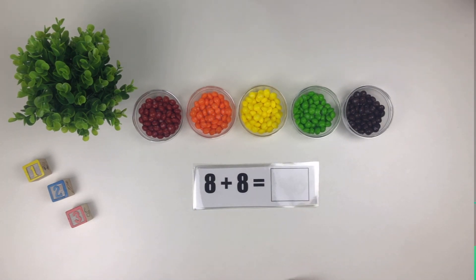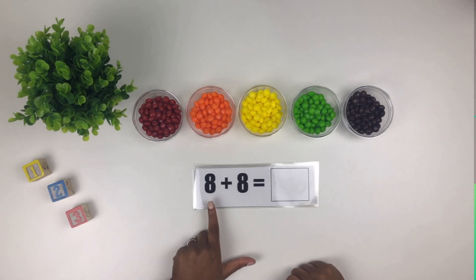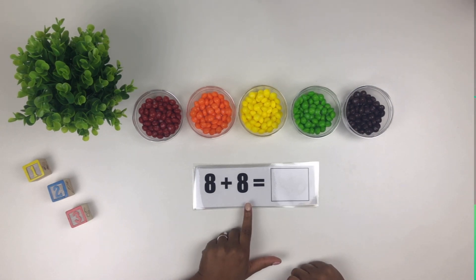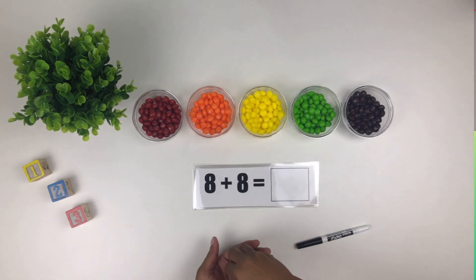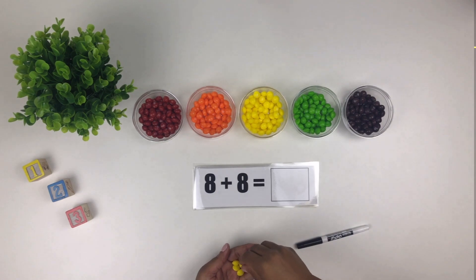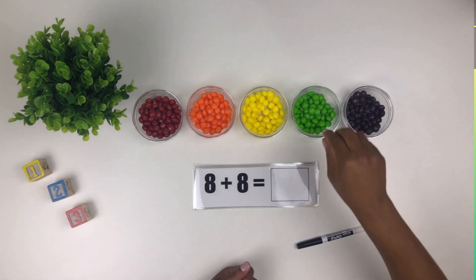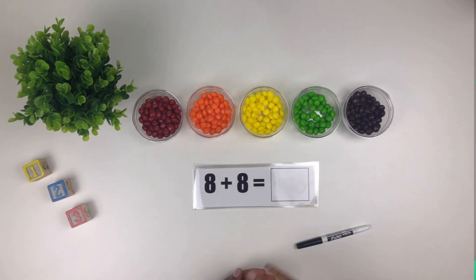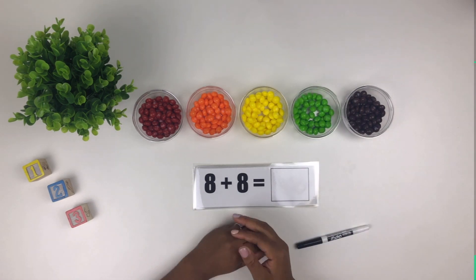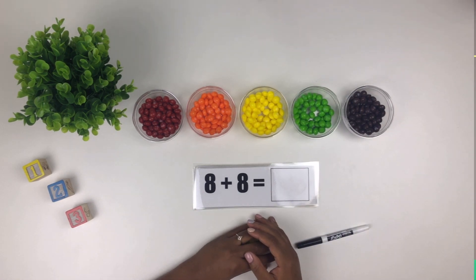Our next problem is eight plus eight. So we're going to take eight yellow Skittles and eight green Skittles. Now we count.